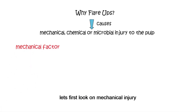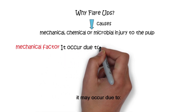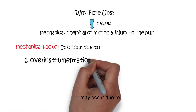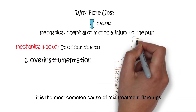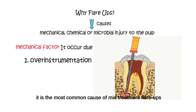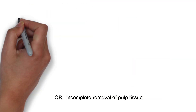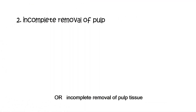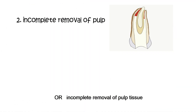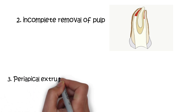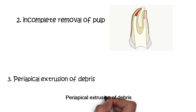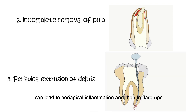Let's first look at mechanical injury. It may occur due to, firstly, over-instrumentation — it is the most common cause of mid-treatment flare-ups. Incomplete removal of pulp tissues can also result in pain. Periapical extrusion of debris can lead to periapical inflammation and then to flare-ups.